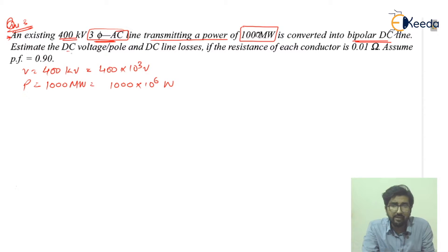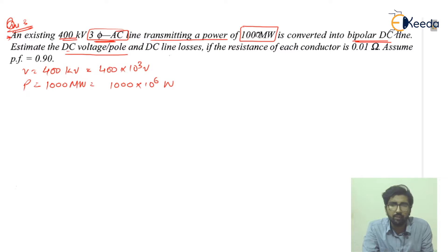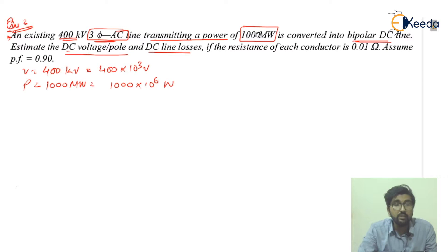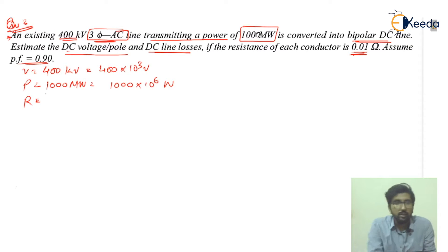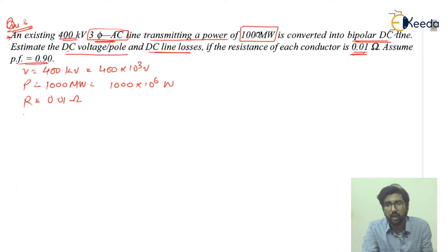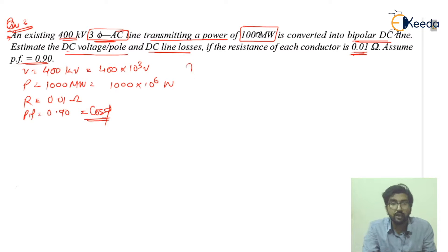We need to estimate the DC voltage per pole and the DC line losses. The resistance of each conductor is 0.01 ohm, and the power factor assumed is 0.90 — that is cos φ equals 0.90. These are the basic data for the problem.